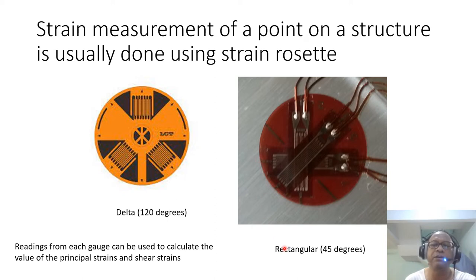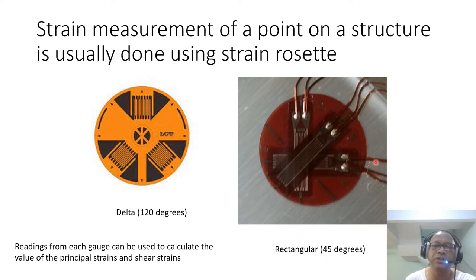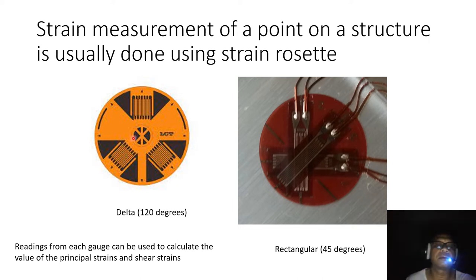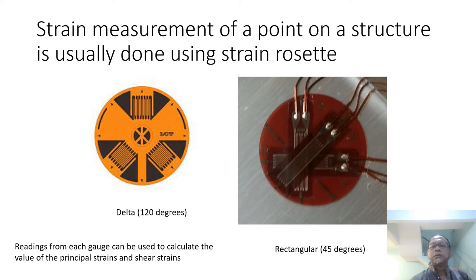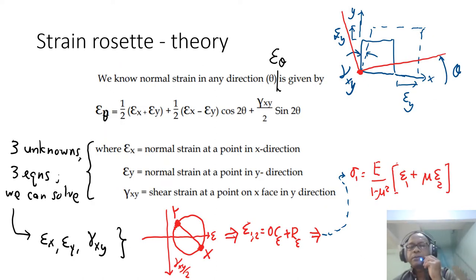Here are two examples of a rosette. A rosette consists of three strain gauges. This one is called a rectangular rosette, which has gauges at 0 degrees, 45 degrees, and 90 degrees. The other is called a delta connection or triangle connection, which has 120 degrees between the gauges.